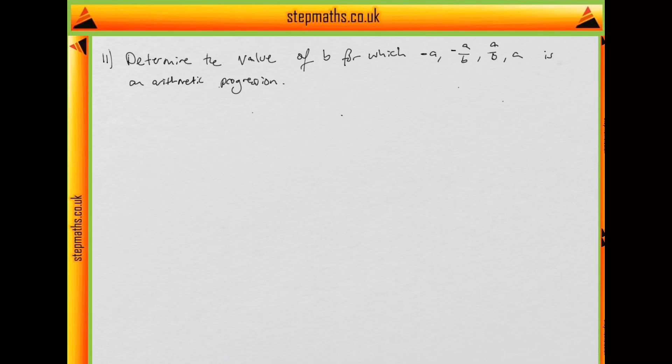In question 11 we're asked to determine the value of b for which this sequence of numbers minus a, minus a over b, a over b, a is an arithmetic progression.